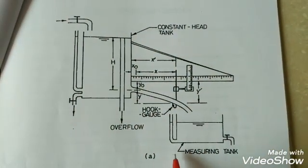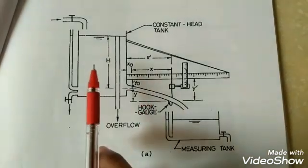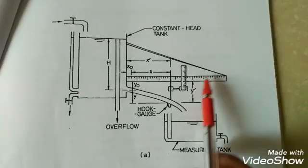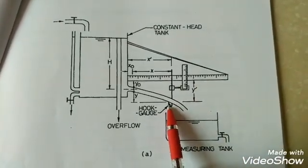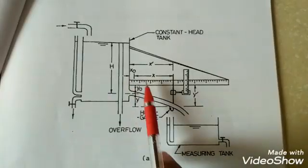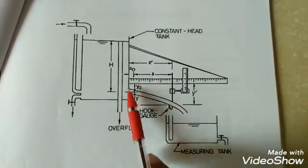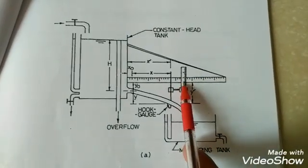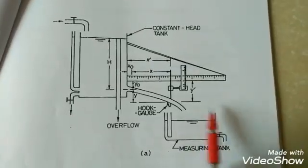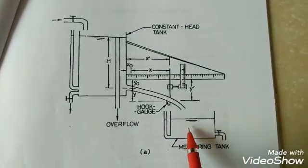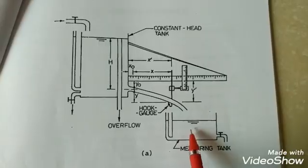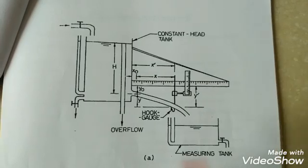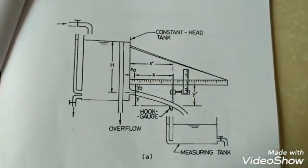This is the schematic representation of the flow through orifice experiment. As explained, there is a storage tank, and we use a graduated scale and a pointer gauge or hook gauge. The graduated scale is used to take the x coordinate, and the pointer gauge or hook gauge is used to measure the y coordinate. There is also a collecting tank to measure the time taken for a 20 cm rise in order to calculate the actual discharge.